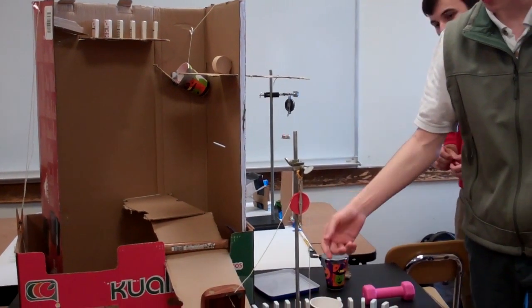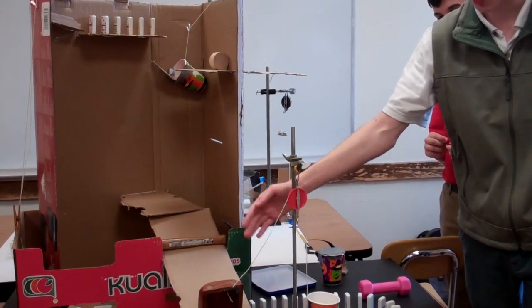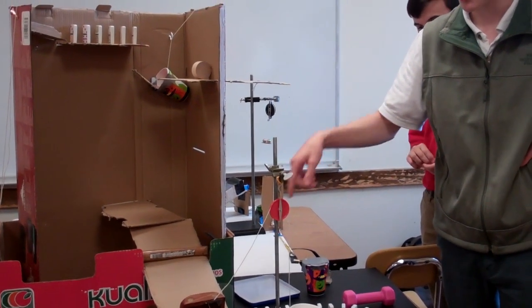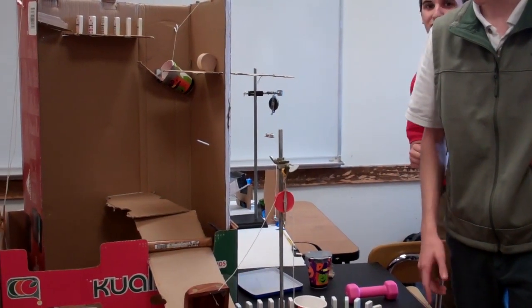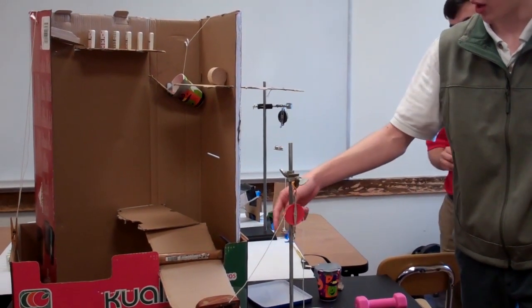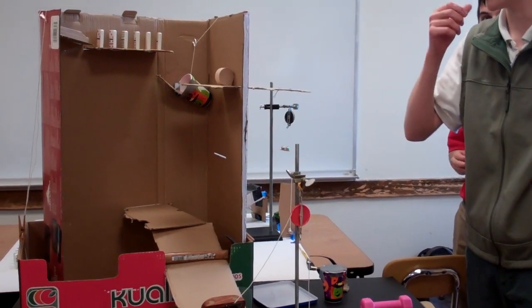This acts as a pulley and since the string will get pulled, the cup will flip over on the dominoes, the dominoes will be set off, get a ping-pong out to the mousetrap. And our simple machines are a pulley, a lever, a wedge, and inclined planes.